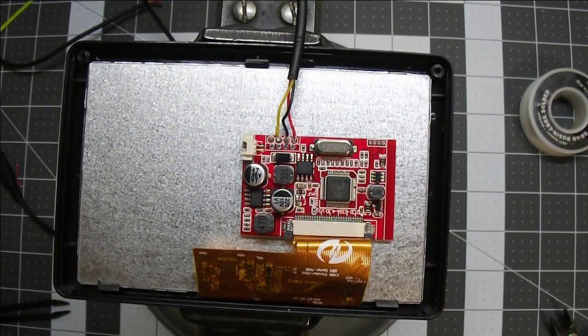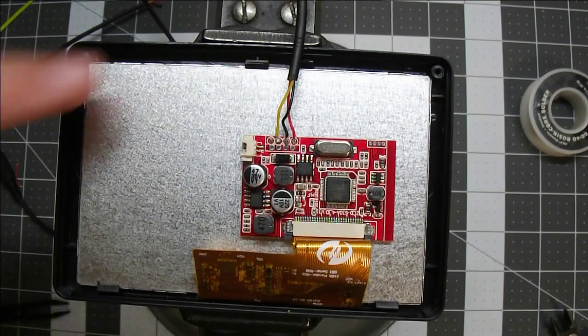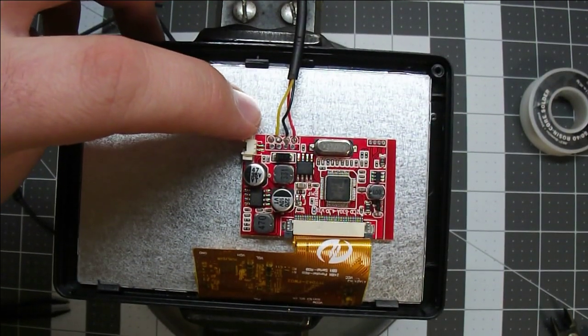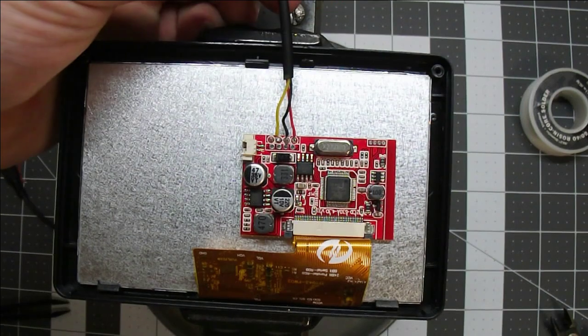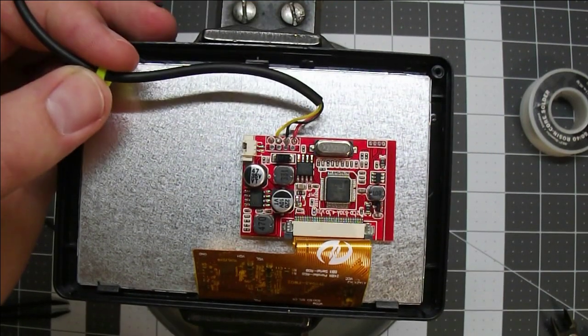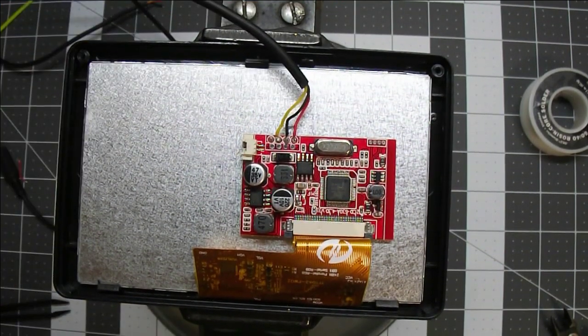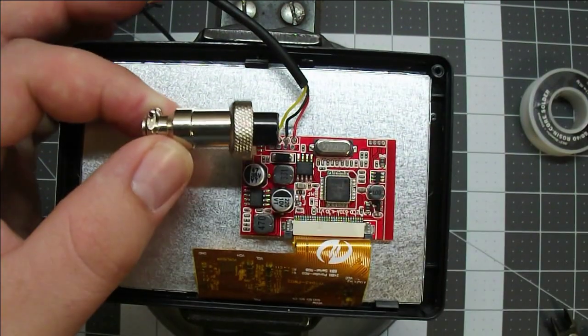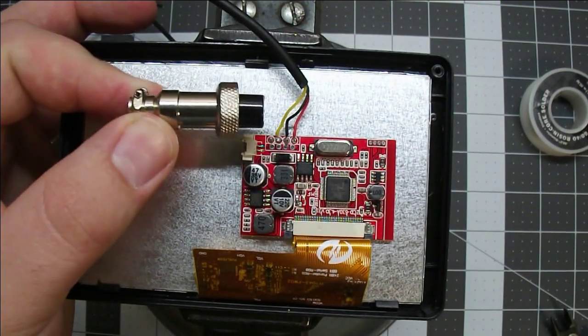That ought to do it, and the white wire is just another ground and it's not necessary. So I'll button this all back up and then we will put the connector on the other end that will plug into the camera module.